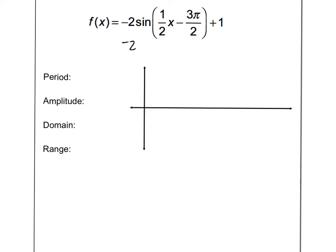So this becomes negative two sine something plus one. I have to pull the one half out. So when I divide three pi over two by one half, that's the same as multiplying by two. So this cancels and I'm left with minus three pi. So now I've got my new function. It's the same function. It's just been rewritten so that we can use our transformations to help us through this.